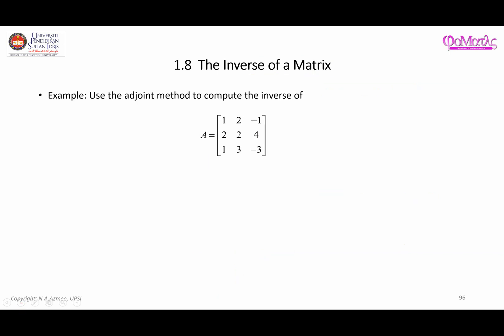It is better to look at an example. Here we have a three-by-three matrix and we're going to apply the adjoint method to compute its inverse. First we need to find the determinant. There are no zeros to make life easier, so any row or column expansion is fine. Let's choose the first column for expansion.